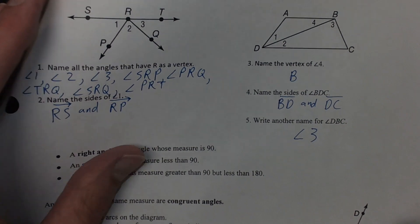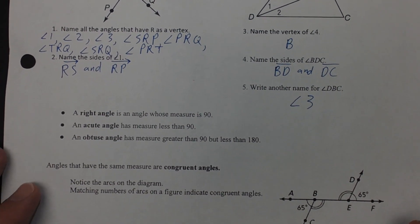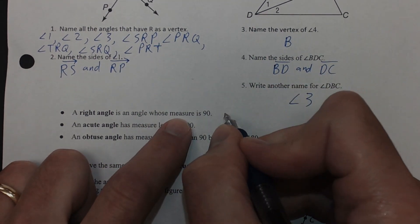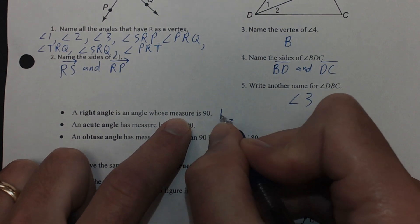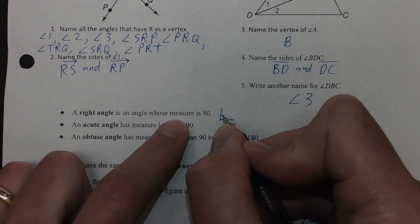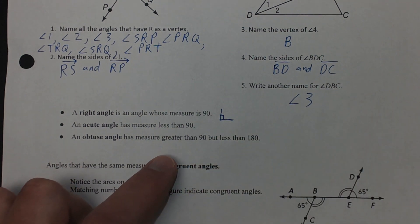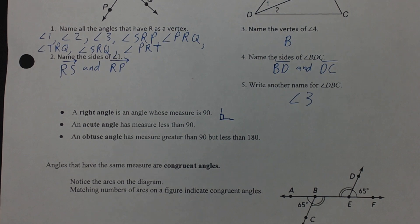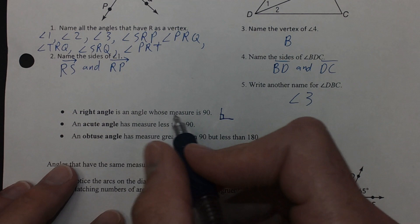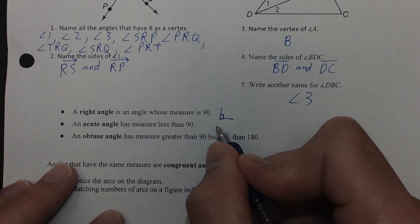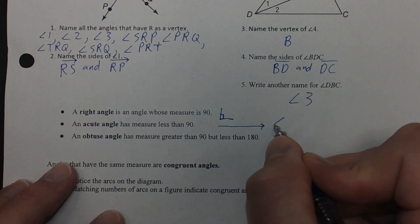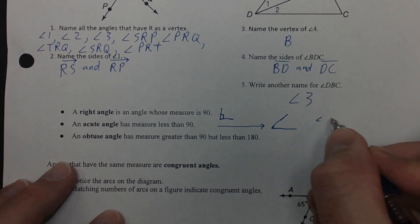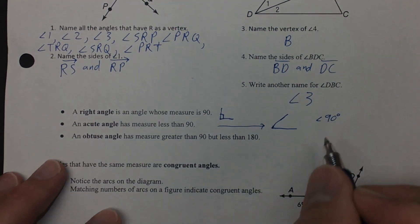Some vocabulary here — talking about right angle, acute angle, and obtuse angle. A right angle is an angle whose measure is 90 degrees. We usually write a little square in the angle to indicate that it is a right angle. An acute angle has a measure less than 90 degrees, so it doesn't open up quite as much.